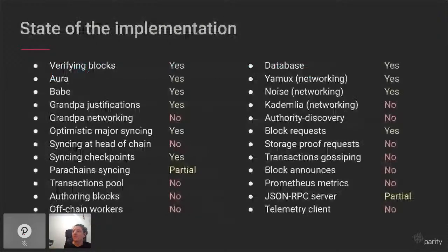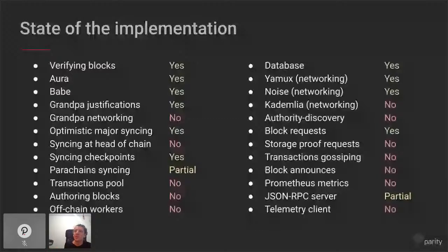Here is a brief overview of what is implemented and what is not. I put one bullet for each major area of how a substrate-based blockchain works. It's about 50-50. Everything related to verifying blocks and syncing the chain is basically implemented. Everything related to authoring blocks is not implemented. Some important things such as receiving block announcements are not yet implemented but are in progress.